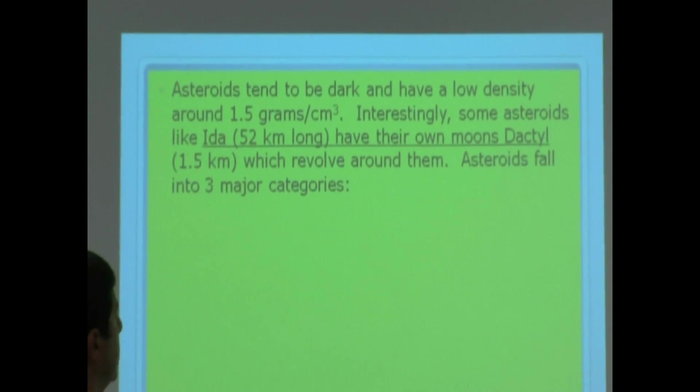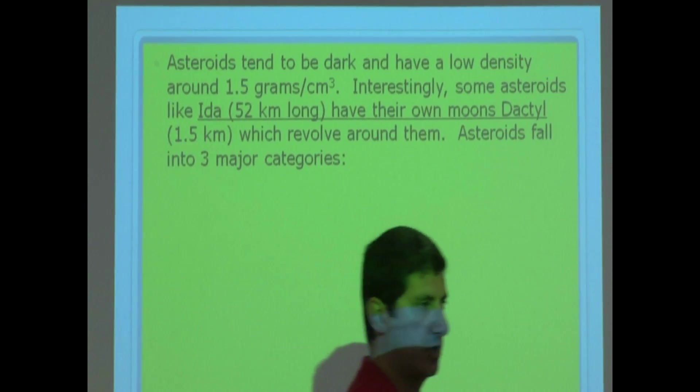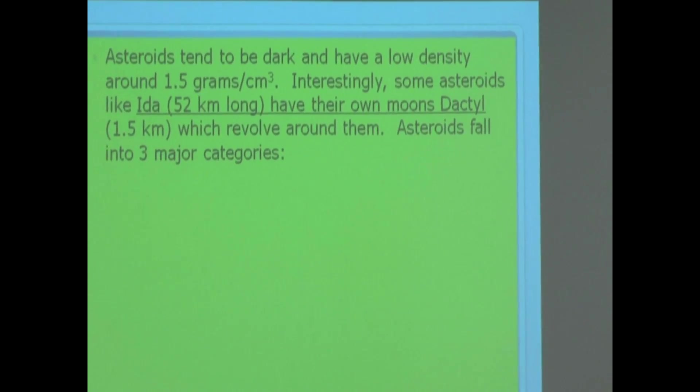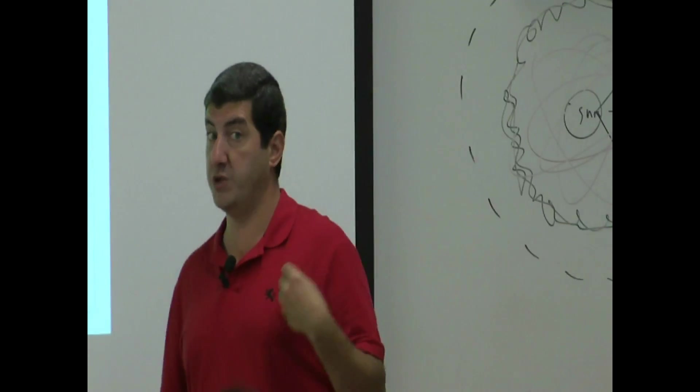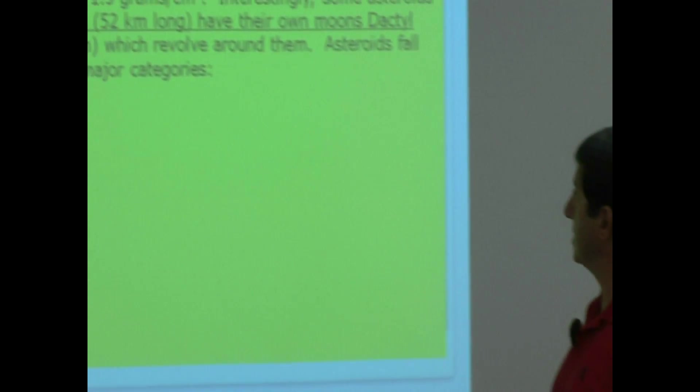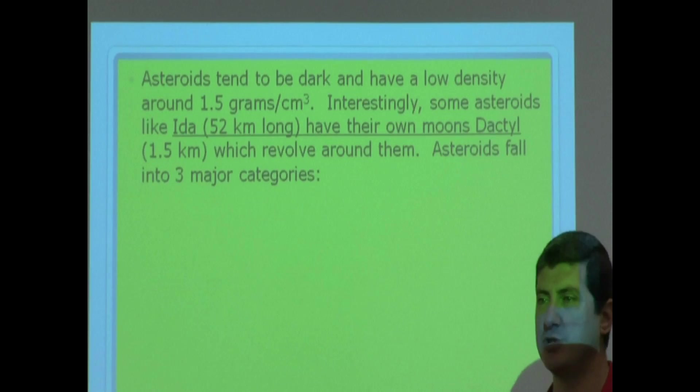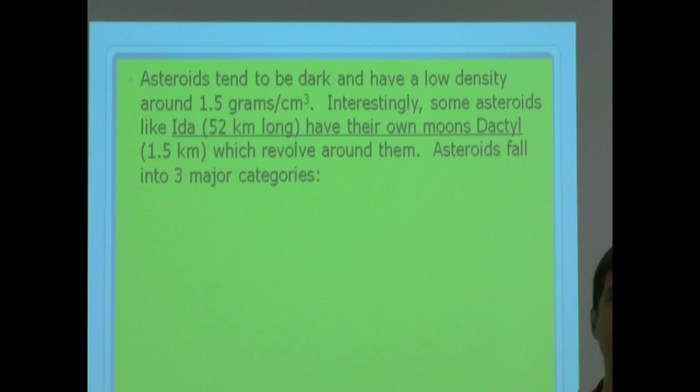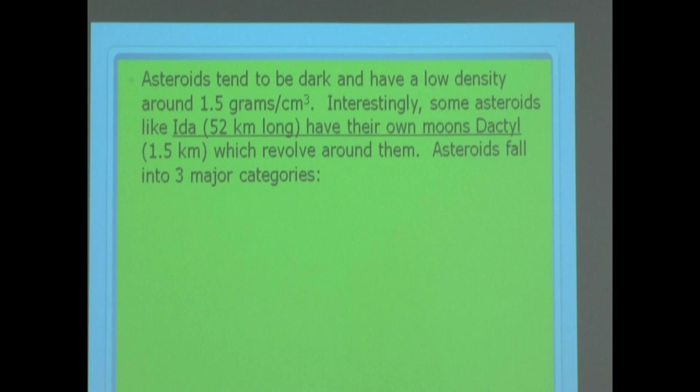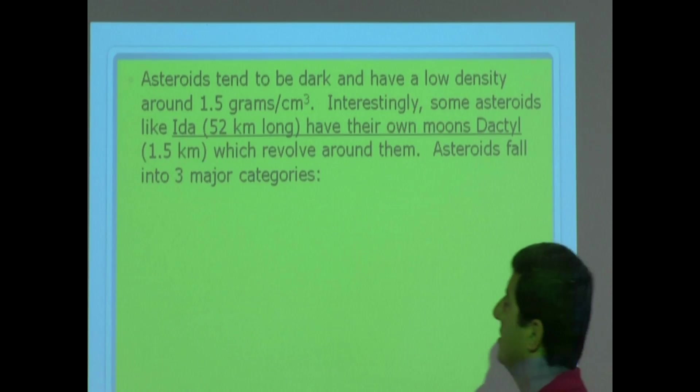Asteroids tend to be dark and have a low density around 1.5 grams per cubic centimeter. So, their density is even less dense than the moon. The moon's density was 3.3 grams per cubic centimeter. So, they're even less dense. Interestingly, some asteroids like Ida, 52 kilometers long, have their own moons named Dactyl. I really like this one. It's a cool picture. They usually show Ida. And next to it is this little moon going around the asteroid called Dactyl, which revolves around them. Dactyl is so small. It's only 1.5 kilometers wide.